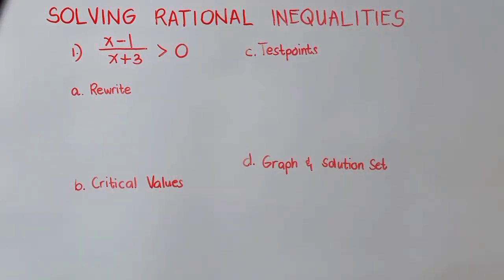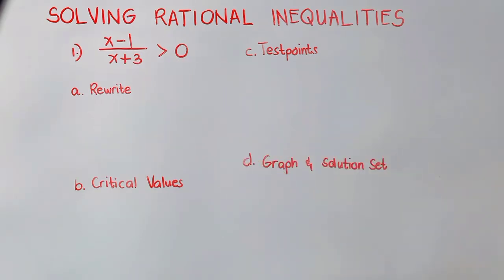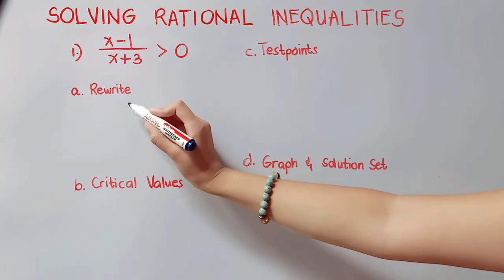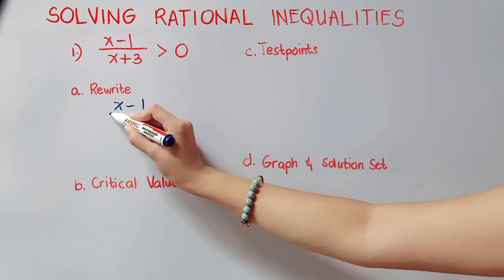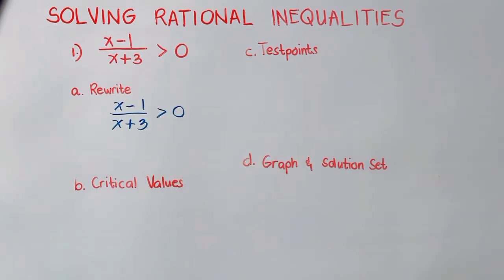We have here x minus 1 all over x plus 3 is greater than 0. Since the left side is already one rational expression and the right side is 0, we'll just have to rewrite this. Now we will get our critical values.